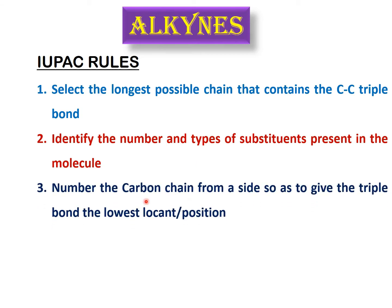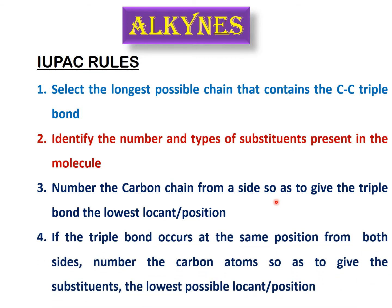You have to number the carbon atoms in the chain by starting the numbering from that end so as to give the lowest possible position to the triple bond. The triple bond is the parent functional group, so you must start numbering from the end that gives the triple bond the lowest possible position. But if the triple bond falls at the same position from both ends, you have to take into account the position of the substituents and start numbering from the end that gives the substituents the lowest possible position.